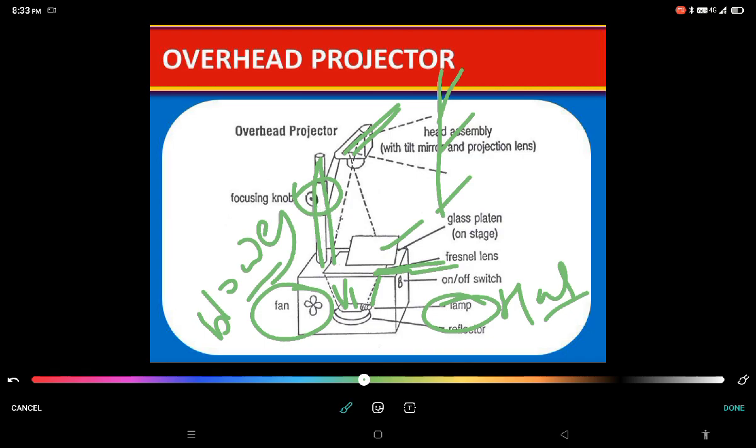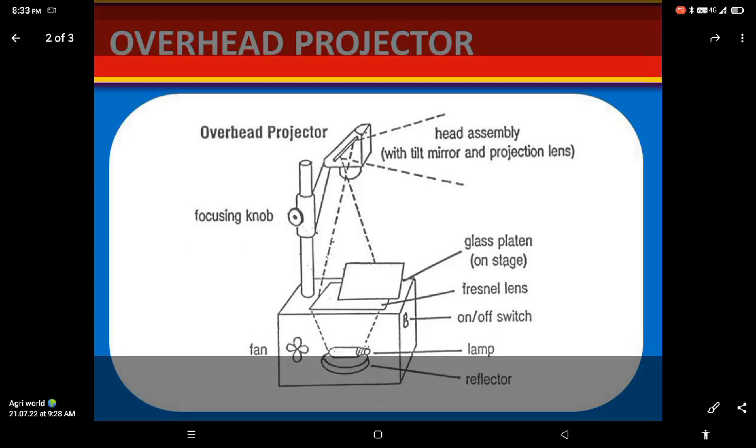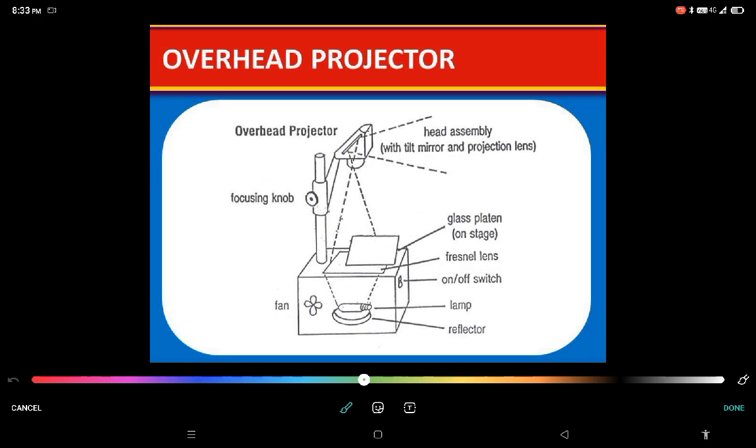So overhead projector typically consists of a large box. See, overhead projector mainly consists of a large box that has lamp and a fan or blower inside it.